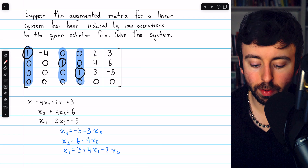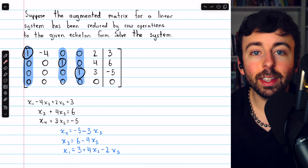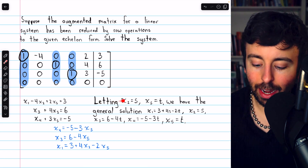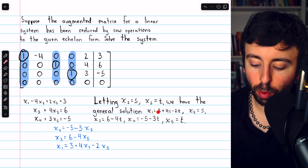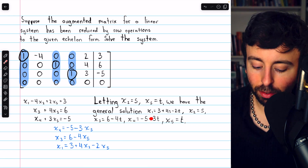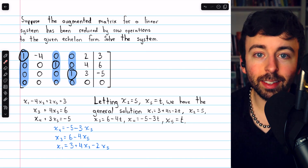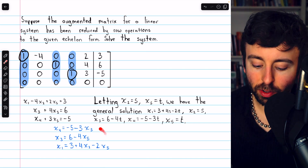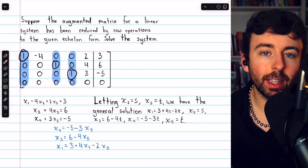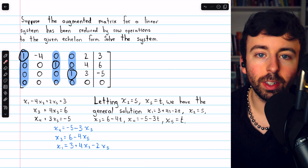Now we assign parameters to the free variables x5 and x2. Letting x2 equal s and x5 equal t, we have the general solution: x1 equals 3 plus 4s minus 2t, x2 equals s, x3 equals 6 minus 4t, x4 equals negative 5 minus 3t, and x5 equals t. We're just taking these equations, replacing the free variables with their assigned parameters. By letting s and t vary independently over the real numbers, we get all of the solutions to the system.